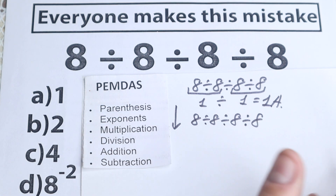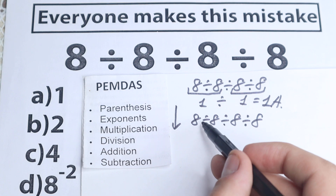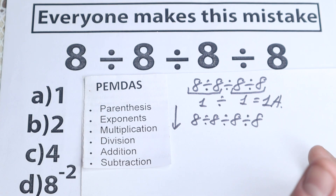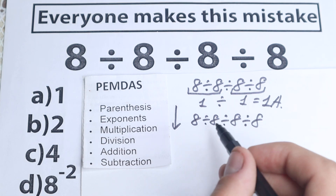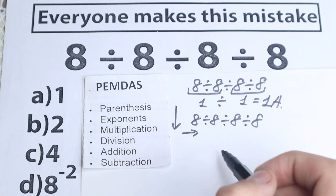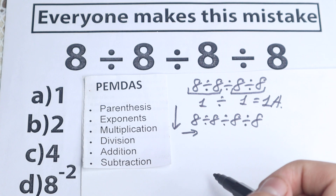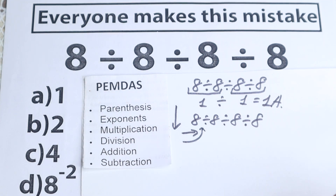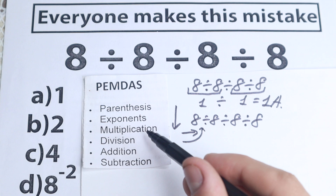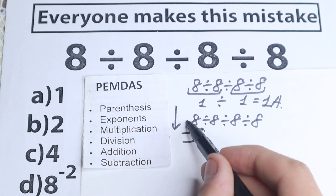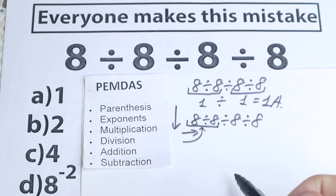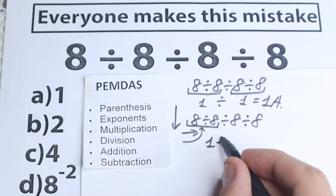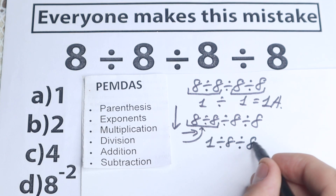The next step is multiplication and division. We have three division signs here — that's our case. PEMDAS works from left to right, so we find the first sign from left to right, which is this division. So A divided by 8 is our first step. 8 divided by 8 equals 1, giving us 1 divided by 8, and we still have the remaining two 8s.